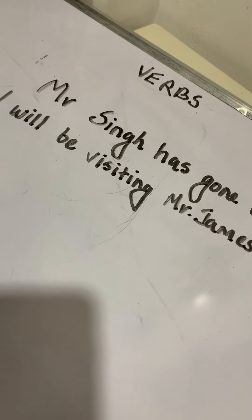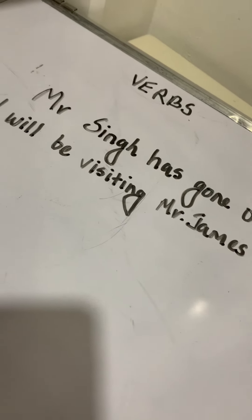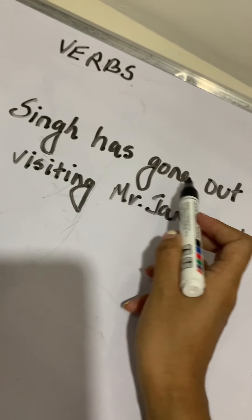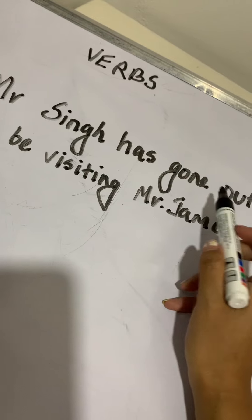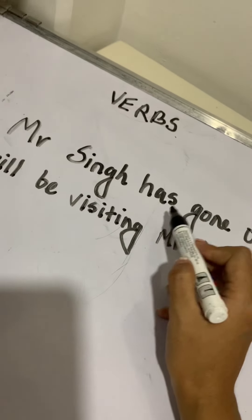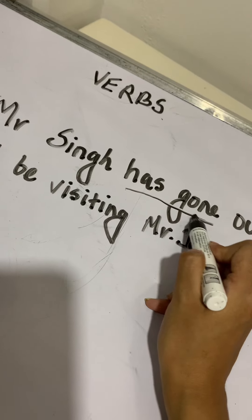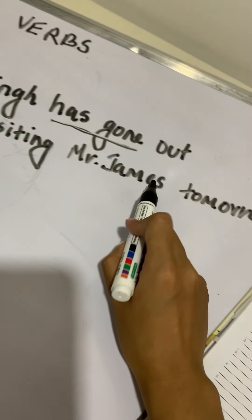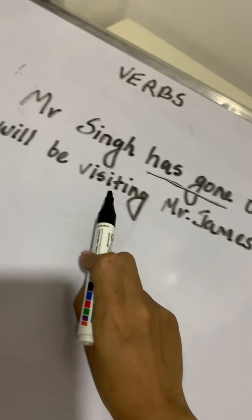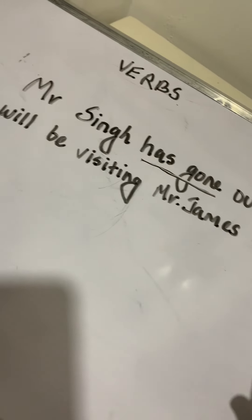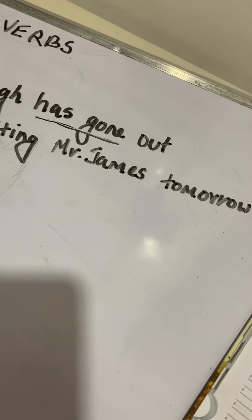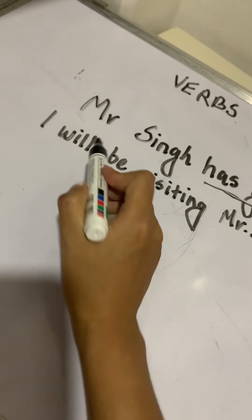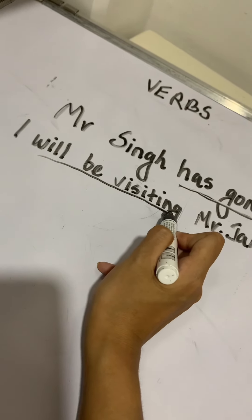A verb may also be made up of two or more words. For example: Mr. Singh has gone out — the verb is has gone, two words. I will be visiting Mr. James tomorrow — the verb is will be visiting, three words.